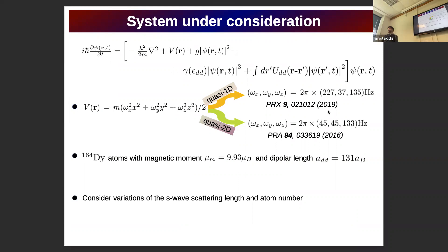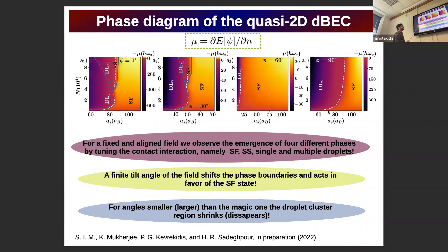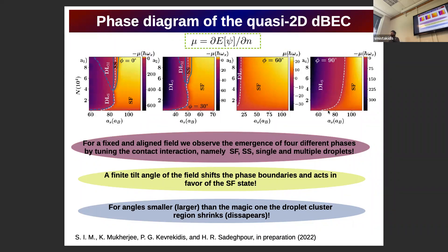To investigate the ground state properties of the system, we consider variations of the S-wave interaction and the particle number. Here you see four different phase diagrams of the system. In the color bar, the chemical potential is depicted, which is related to the energy of the system. The phase diagrams are shown as a function of the S-wave scattering length and the particle number. We identify the states not just by the chemical potential, but also by inspecting the density distributions, momentum distributions, and the phases of the wave functions.